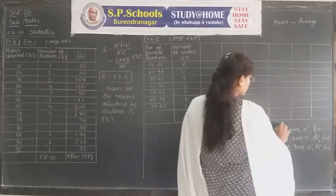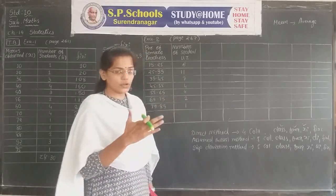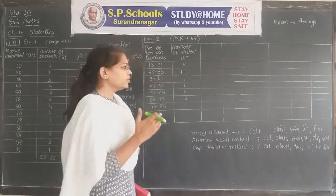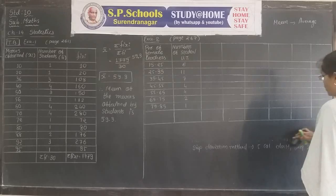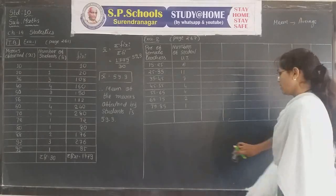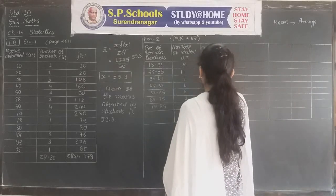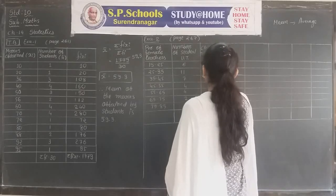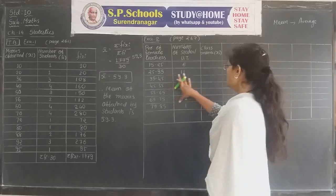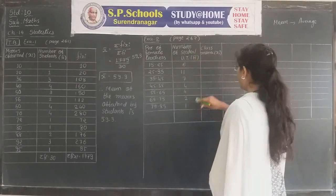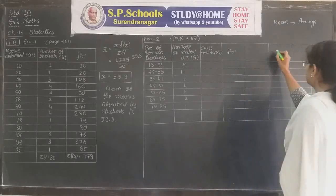In all three methods, three columns are the same: class and frequency are given in the question, and the third is for class mark xi. The fourth and fifth columns depend on the method being used. For this example we use all three methods, so I draw a single table for all three. The first two columns are from the question. The third column is for class mark xi. For the direct method, the fourth column is fi·xi.